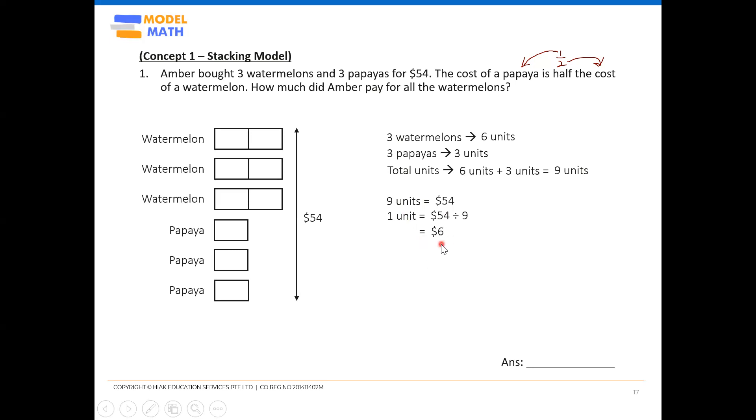Every time you found the value of one unit already, read back the question again. How much did she pay for all the watermelons? So all the watermelons means everything here. The three watermelons, not the papayas. So that means this part.